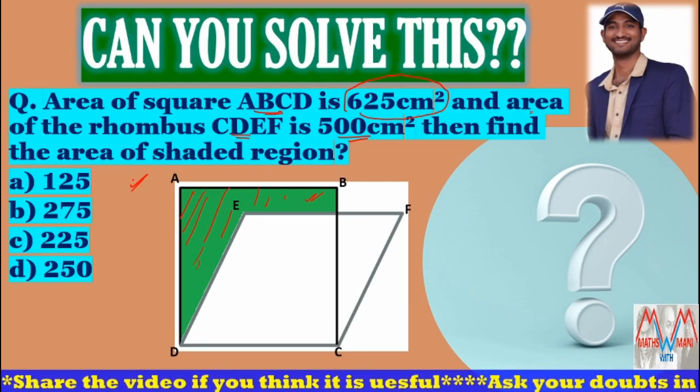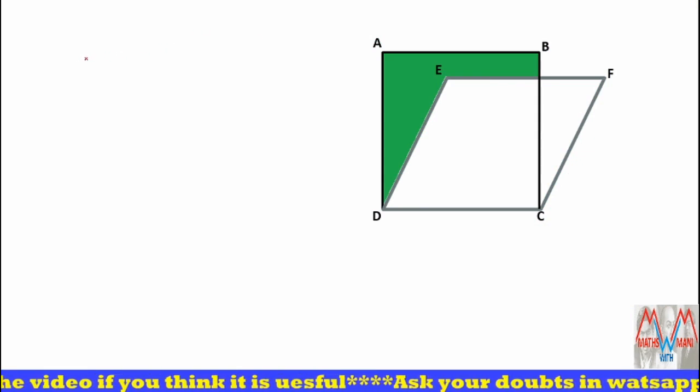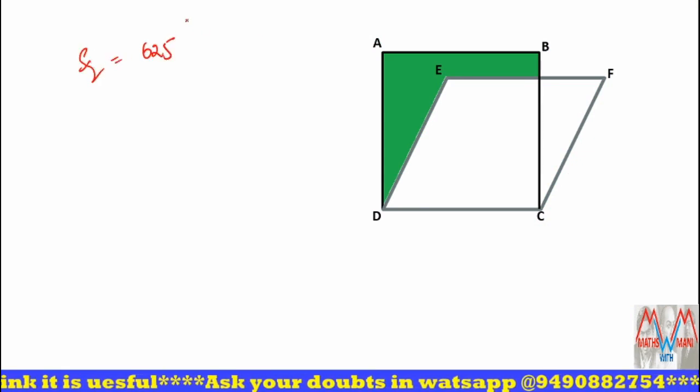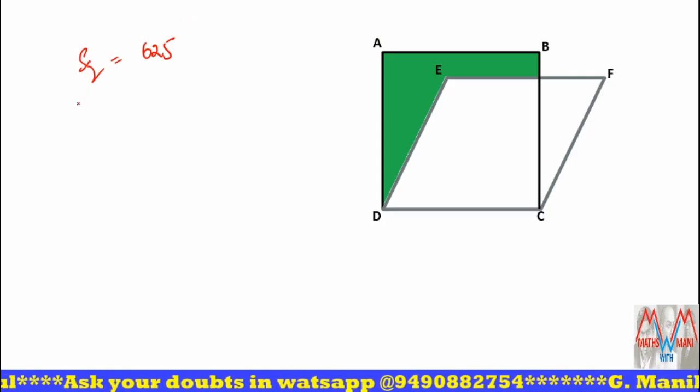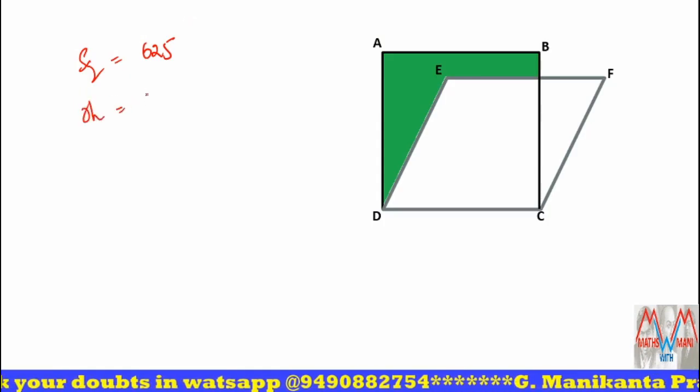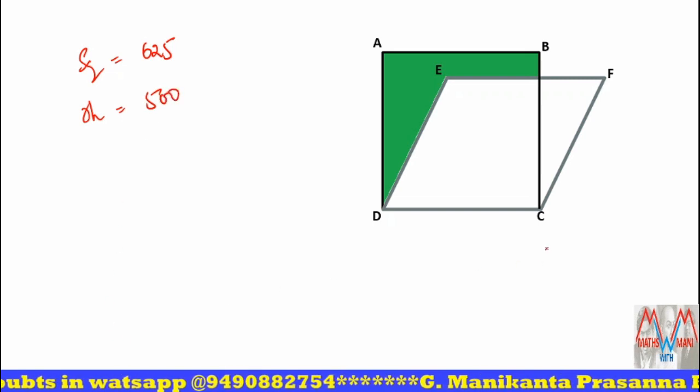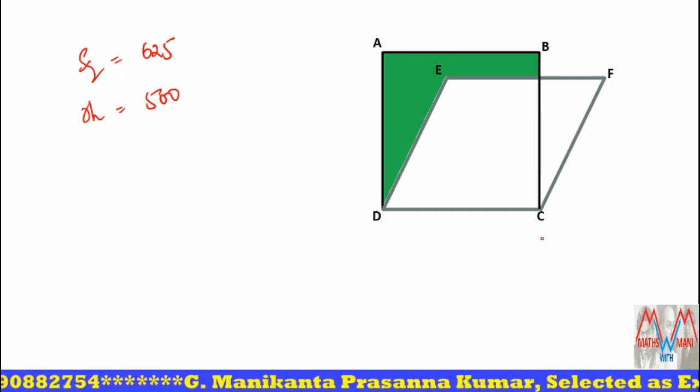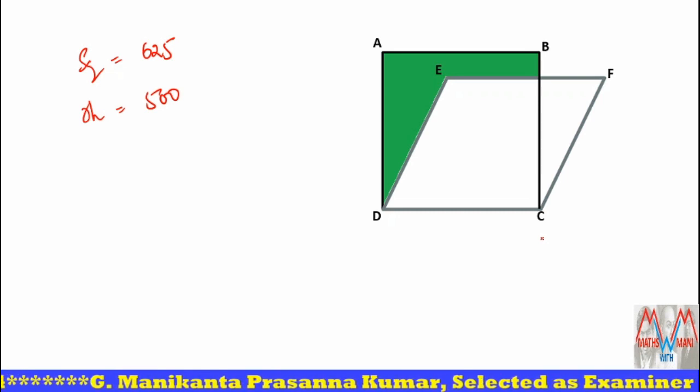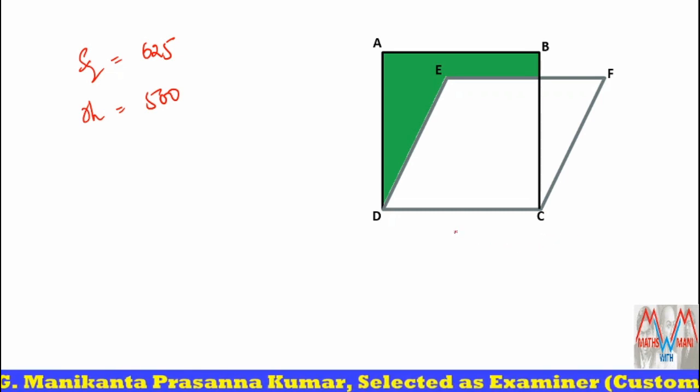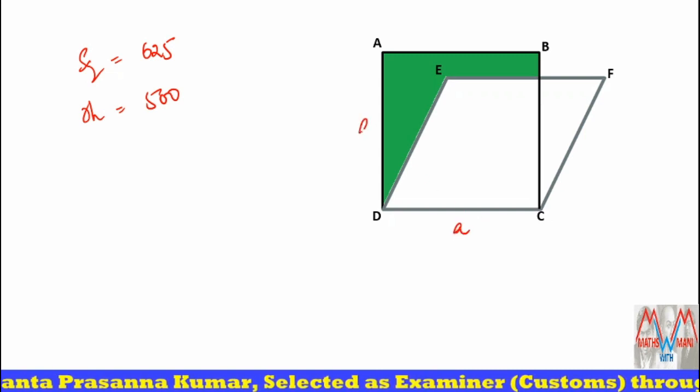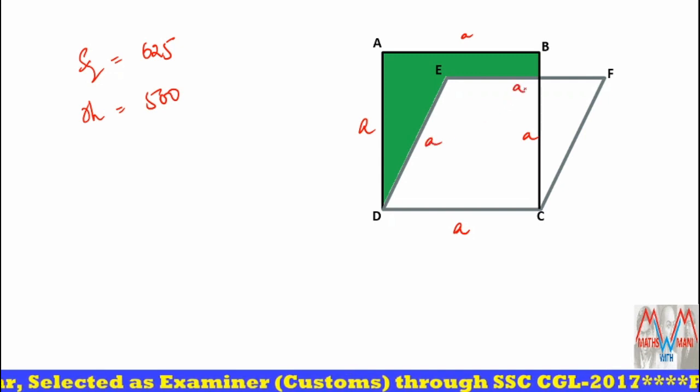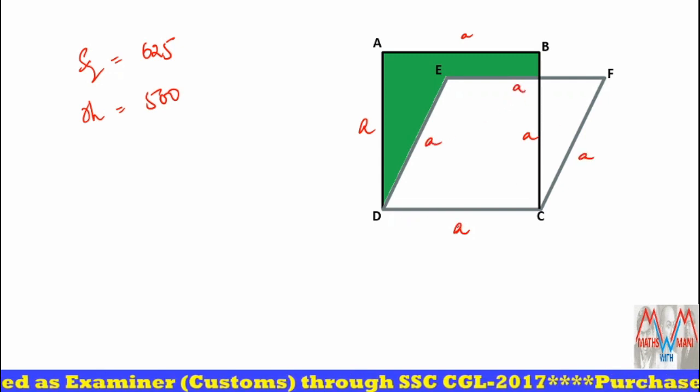If you observe clearly, what is the area of the square? 625. And what is the area of the rhombus? 500. Basically, what is the difference between rhombus and square? In both rhombus and square all the sides are equal. For suppose if I take the side of the square is a, all the sides are a.